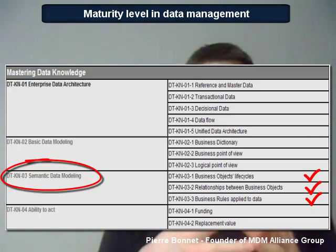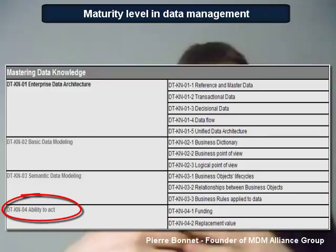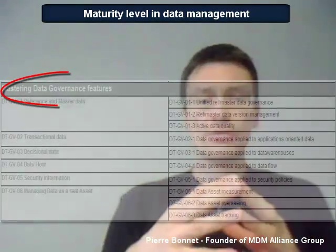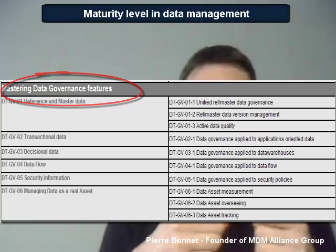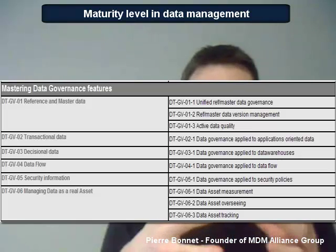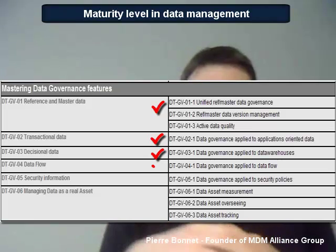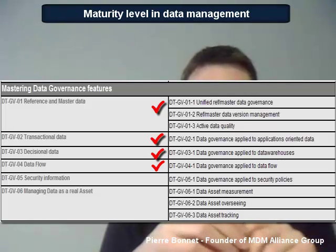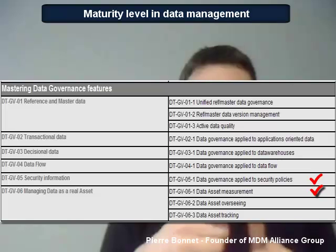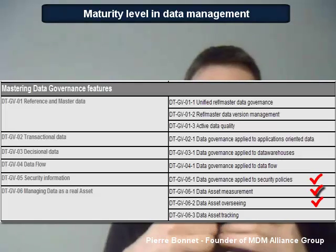The last part of the data knowledge assessment is about the availability of a funding to art. In the data governance feature assessment, we measure the availability of key business functions allowing business users to really govern their data. Depending on the nature of data, the governance features can be different — meaning we assess governance applied to reference and master data, then transactional data, decisional data, and data flows. The last part of the data governance features assessment covers security, management of key indicators of performance applied to data, and the quality of data tracking and auditability.